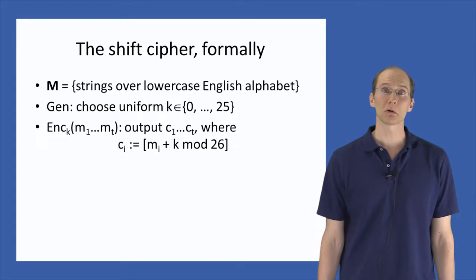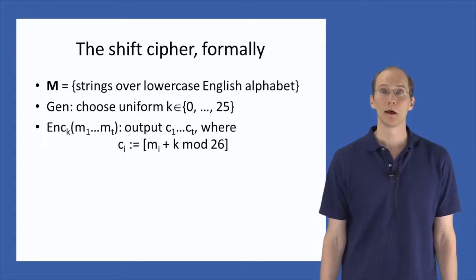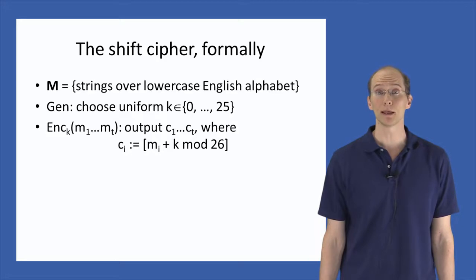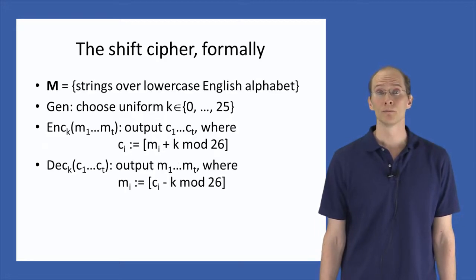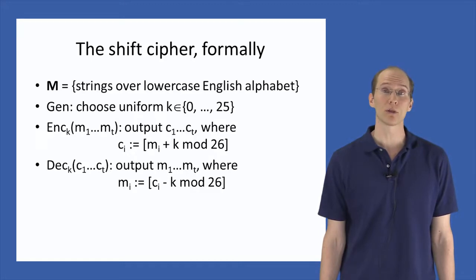As we have said, decryption just reverses this process so that the decryption of a ciphertext consisting of the characters c1 through ct using the key k is done by simply outputting the message consisting of the characters m1 through mt where each mi is just ci minus k mod 26. I leave it to you to convince yourselves that correctness holds.